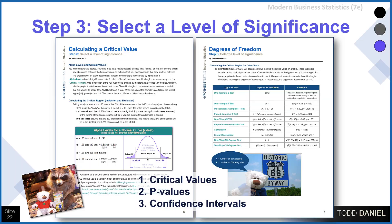Step number three: select a level of significance. This is a way of establishing a cutoff — demonstrating that if we find differences this large, we're going to make the inference that the differences we've observed are not due to chance, but in fact are due to an effect. I'm going to show you three ways that we might establish that level of significance and interpret whether our findings are statistically significant.